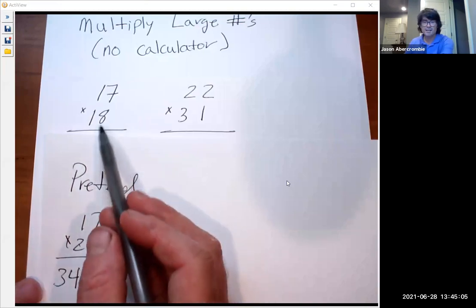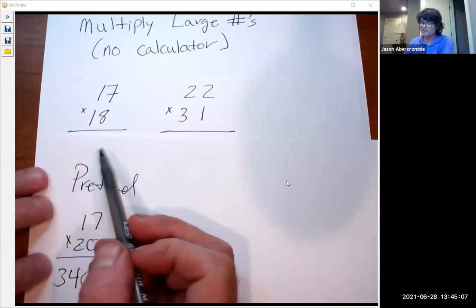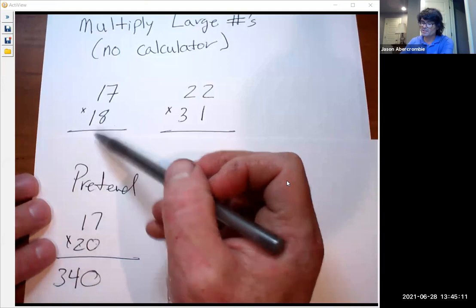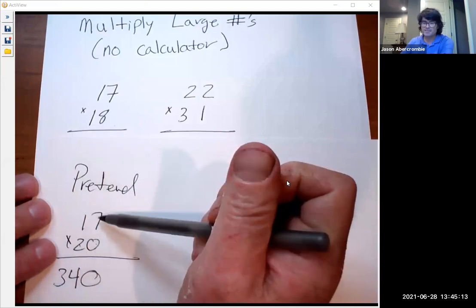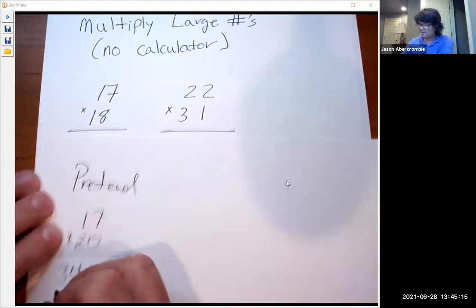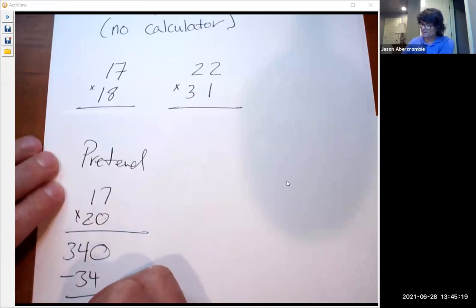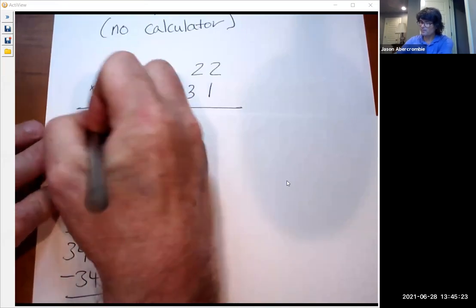We actually have 17 times 18. So all you're going to do now is say well we had an 18 not a 20. So I want to take basically 2 off of this, times 17, and say we're going to take away 2 times 17. That's 34 and it's going to be 306 right there.